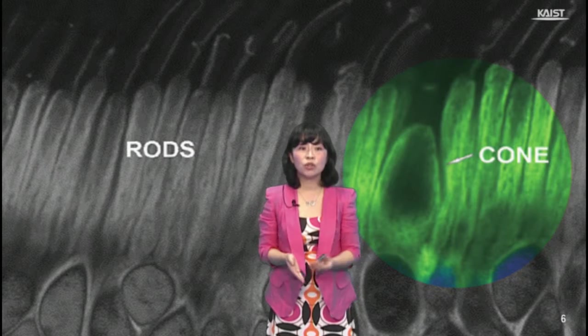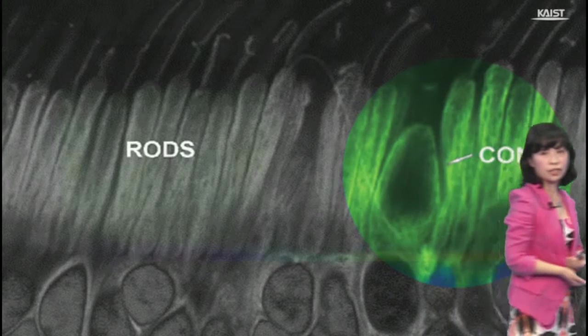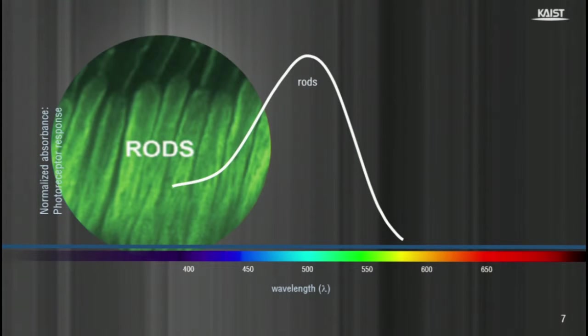Instead, let's look into the response curves of the rod cells and cone cells along the visible light. The curve here indicates the absorbance spectrum of rod opsin, which is the opsin protein in rod cells. It contains only one pigment, so hue differences are not perceivable. Hence, objects are seen in grayscale. In addition, as shown here, rod cells are more sensitive at 500 nm wavelength region.